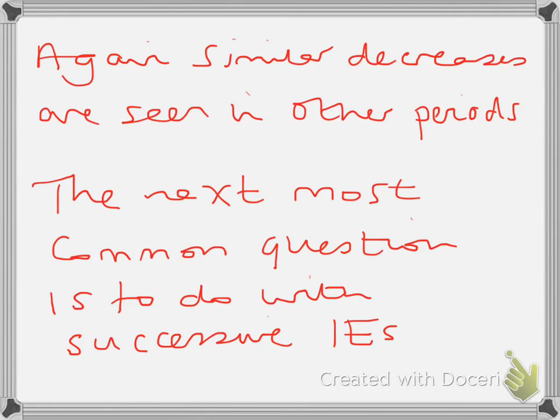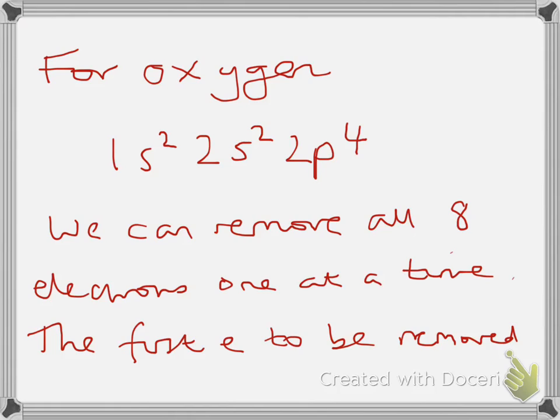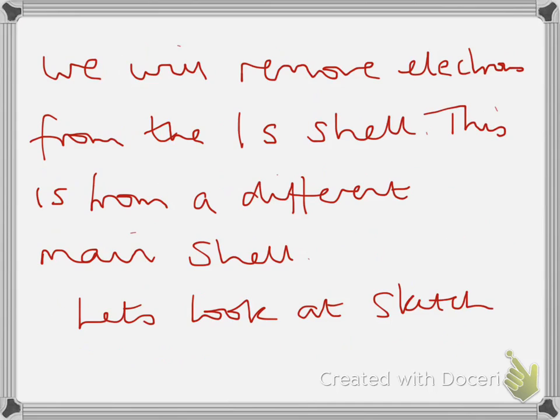The next most common question is to do with successive ionisation energies. This is where you take one atom and remove an electron at a time and compare the IE values. If we have a look at the example for oxygen the electronic configuration for oxygen is 1s2, 2s2, 2p4. We can remove all 8 electrons one at a time. For the first electron to be removed it will be removed from a 2p4 as will the next 3 that we remove. Then we will be removing electrons from lower energy orbitals, the 2s. So this is a different subshell still within the second main shell. Once both 2s electrons are removed we will remove electrons from the 1s shell so that's going down to a different main shell. Obviously that's a different 1s compared to 2s.